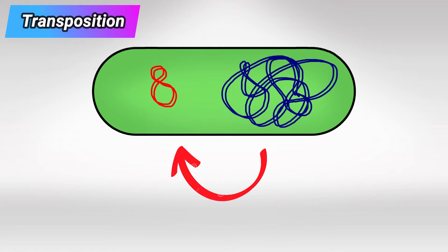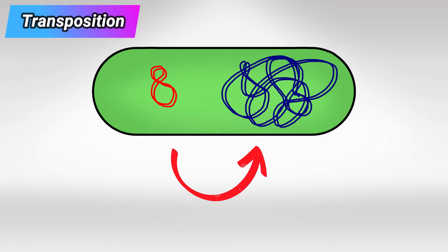Transposition refers to the process of extracting a small part of the bacterial DNA to become the bacterial plasmid, or reintegrating this part of the bacterial plasmid back into the bacterial chromosome.